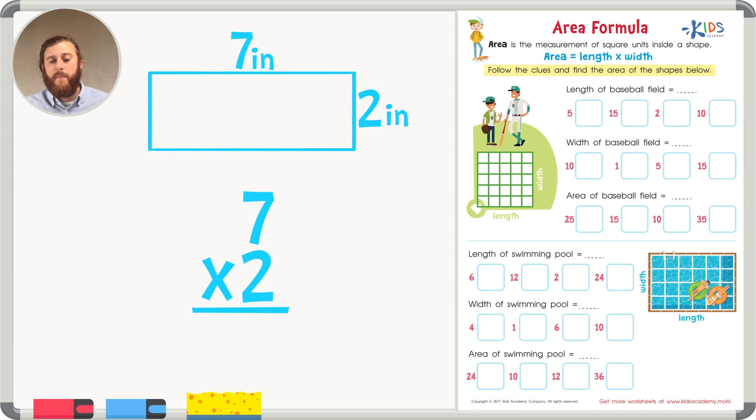Let's skip count by twos seven times to find out what seven times two really is. Two, four, six, eight, ten, twelve, fourteen. Seven times two is fourteen, making the area of this problem fourteen square units.